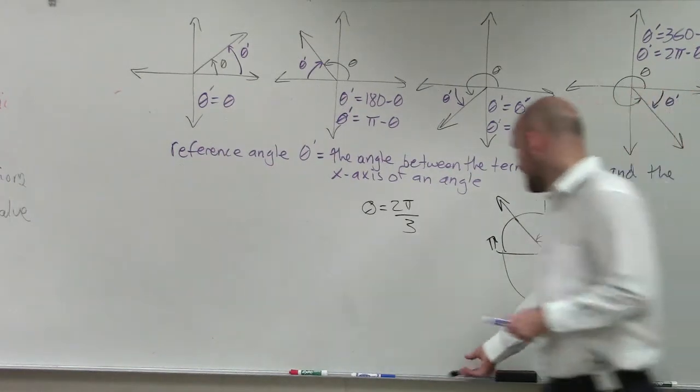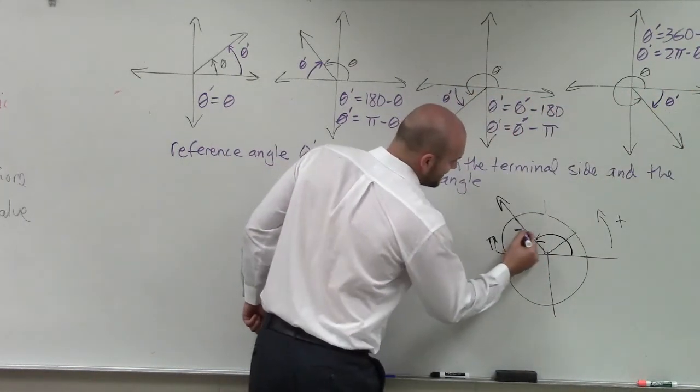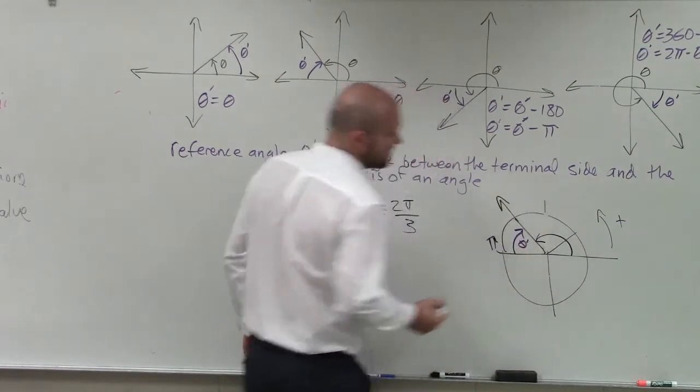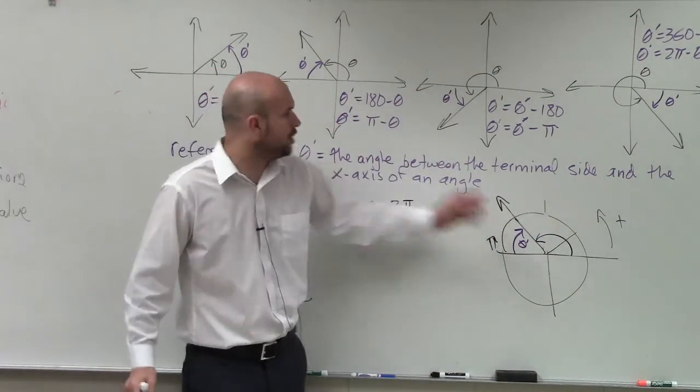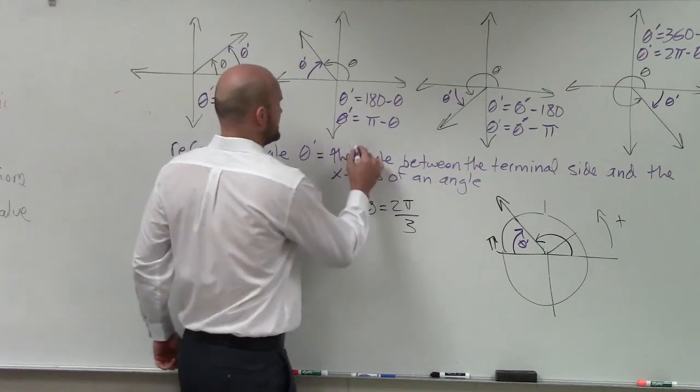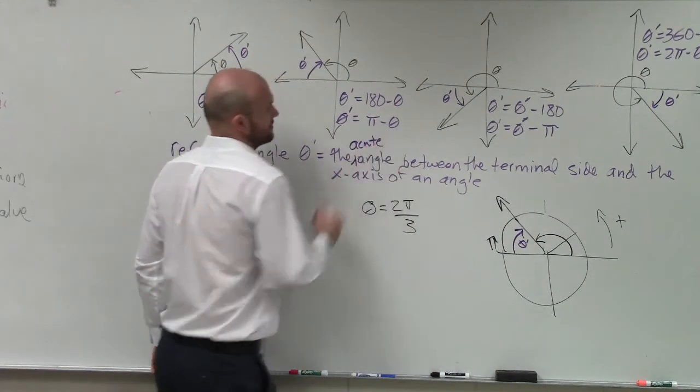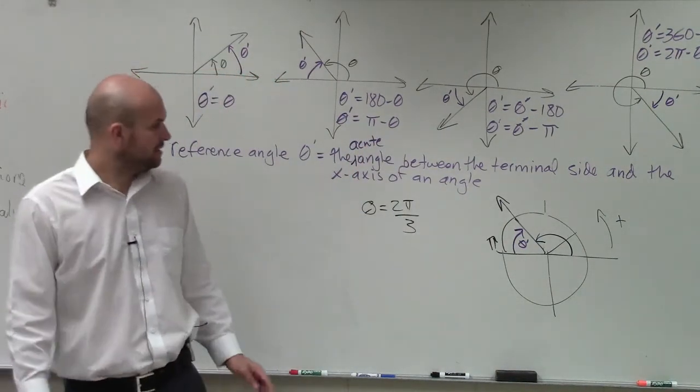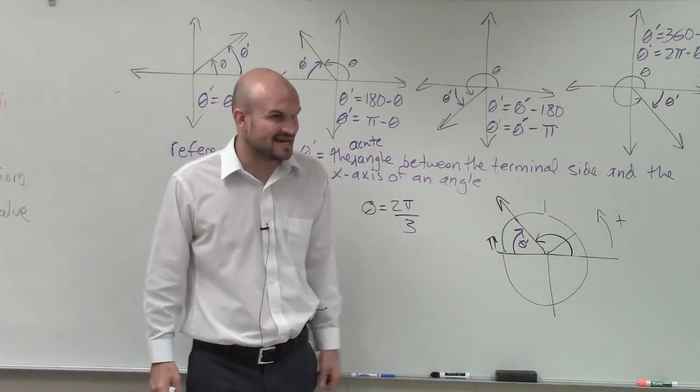But that's not what I'm trying to find. I'm trying to find what this angle is going to be, which we call theta prime. Because that's the acute—oh shoot, I'm sorry—that's the acute angle. Got to make sure it's acute. So it's the acute angle between the terminal side and the x-axis.